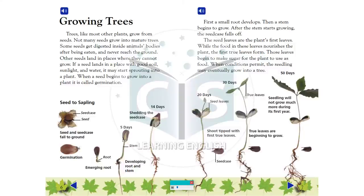First, a small root develops. Then a stem begins to grow. After the stem starts growing, the seed case falls off. The seed leaves are the plant's first leaves. While the food in these leaves nourishes the plant, the first true leaves form. Those leaves begin to make sugar for the plant to use as food.